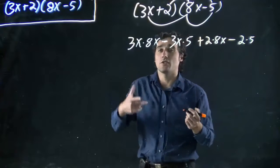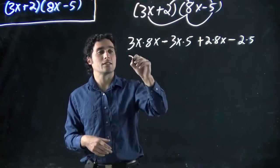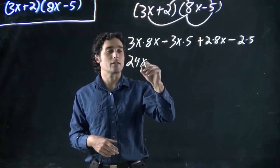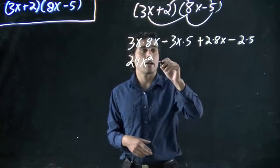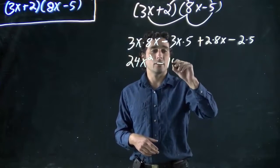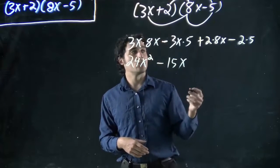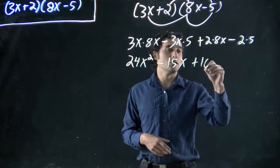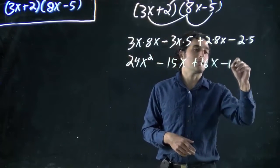Great. Now we actually do the multiplication. 3x times 8x: 24x squared. And we got 3x times 5: minus 15x. 2 times 8x: plus 16x. Finally minus 10.